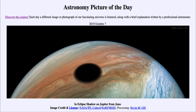Io is constantly erupting with volcanoes that essentially turn the moon inside out. Now, like any other solid object, it will cast a shadow — sunlight streaming from the sun strikes the moon Io and that blocks the light, creating a cone of shadow behind it.